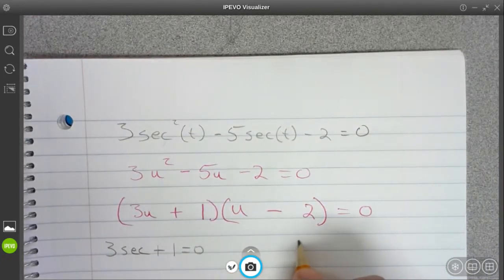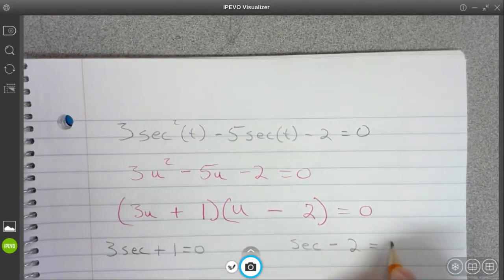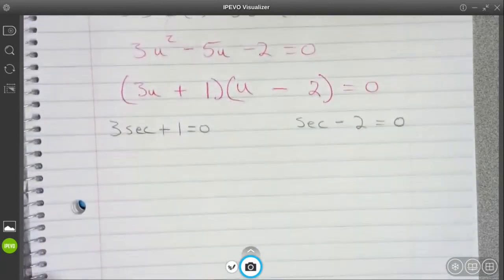And then I'm also going to have secant minus 2 equals 0. I'm going to solve both of these equations.